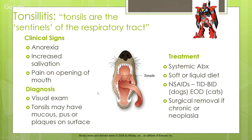Tonsils are the first lymph nodes where the respiratory tract starts — called the sentinels of the respiratory tract — and the first site to react to incoming disease. Tonsillitis can cause anorexia, increased salivation, and pain when opening the mouth. You can see the tonsils at the back of the tongue on either side of the soft palate; they may have mucus, pus, or plaques on the surface. Treatment is systemic antibiotics and a soft or liquid diet.